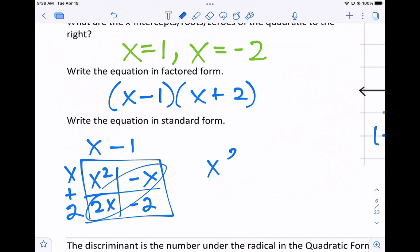Combine like terms, and we'll get x squared plus x minus 2. So standard form is no parentheses. It's when you multiply it out.